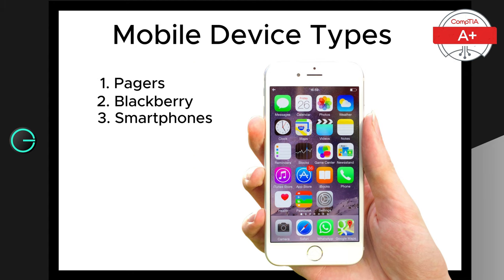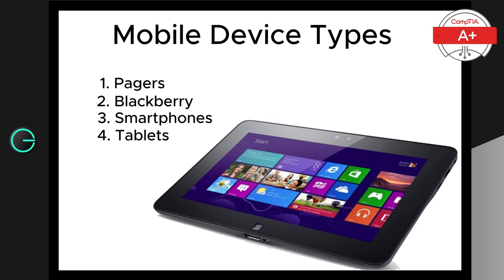Next we have tablets. These devices are larger than smartphones and are great for media consumption, reading, and even productivity tasks. Tablets often come with detachable keyboards, making them versatile for both entertainment and work. Popular tablets include the iPad, Samsung Galaxy Tab, and Microsoft Surface.